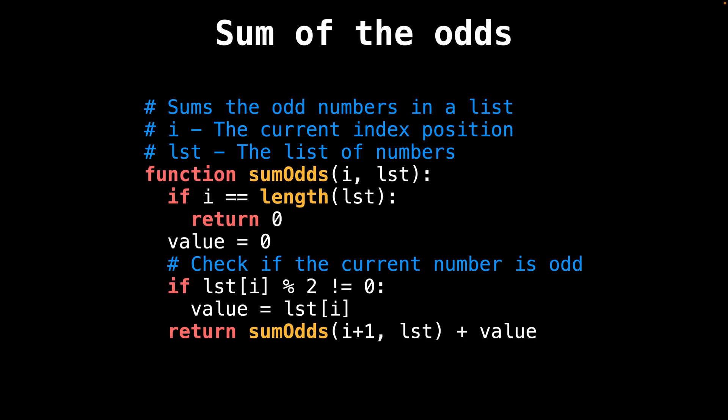Here's some pseudocode on how to implement the sum_odds function — let's walk through it. The first thing you'll notice is that there are two parameters for this function: the index position that we're at and a reference to the list of numbers. Next up we have the base case, which checks if the index position is equal to the length of the list. This checks to see if we have reached the end of the list.